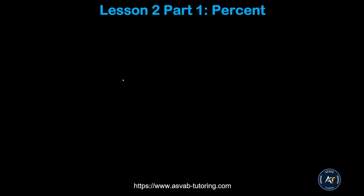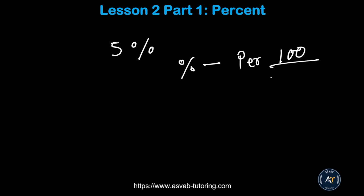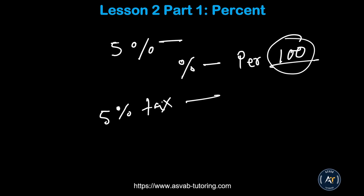Before we do anything, let me ask you: what does percent mean to you? When you hear the word percentage, what does the percent sign mean? For example, what does a five percent discount mean? Percent means 'per 100' — it comes from the word 'cent.' One dollar equals 100 cents. So five percent discount means five dollars off every hundred dollars. Five percent tax means you pay an extra five dollars for every hundred dollars.